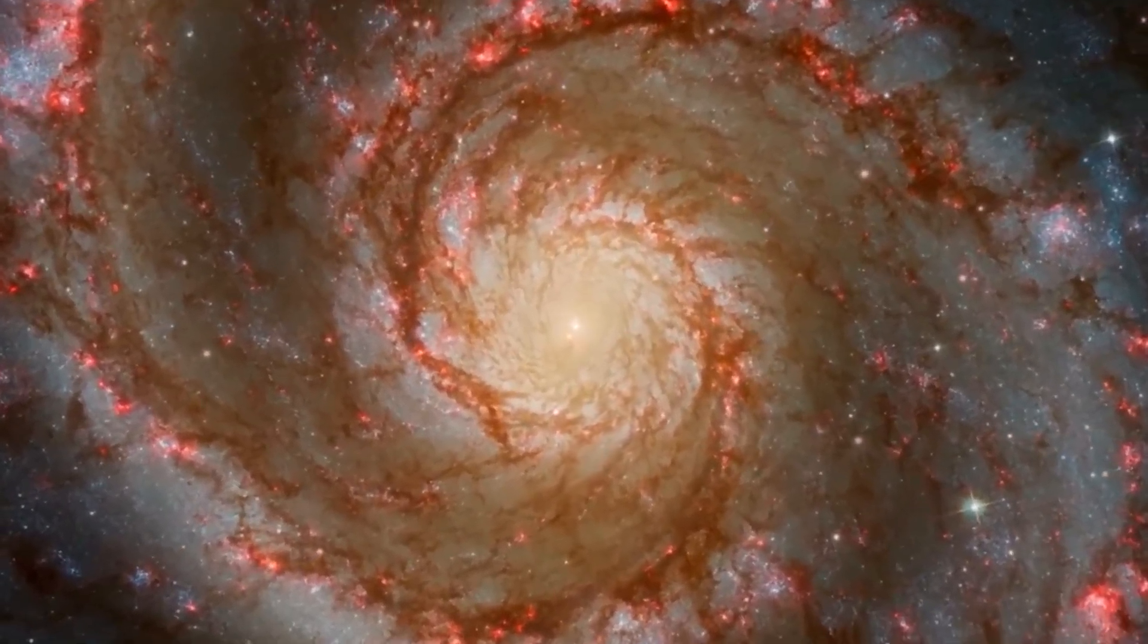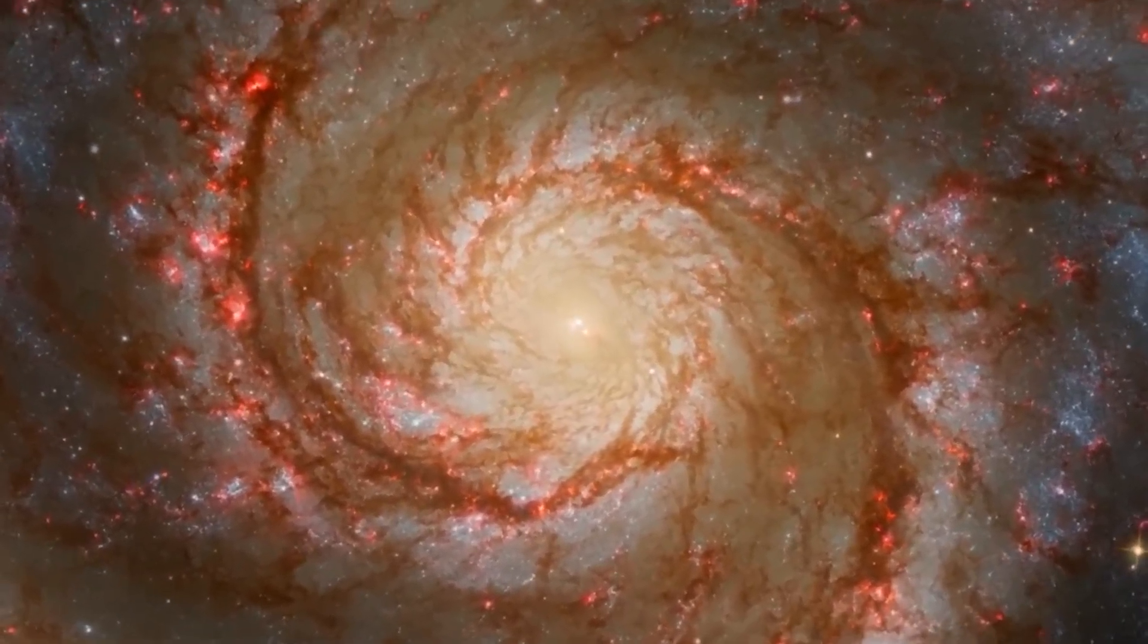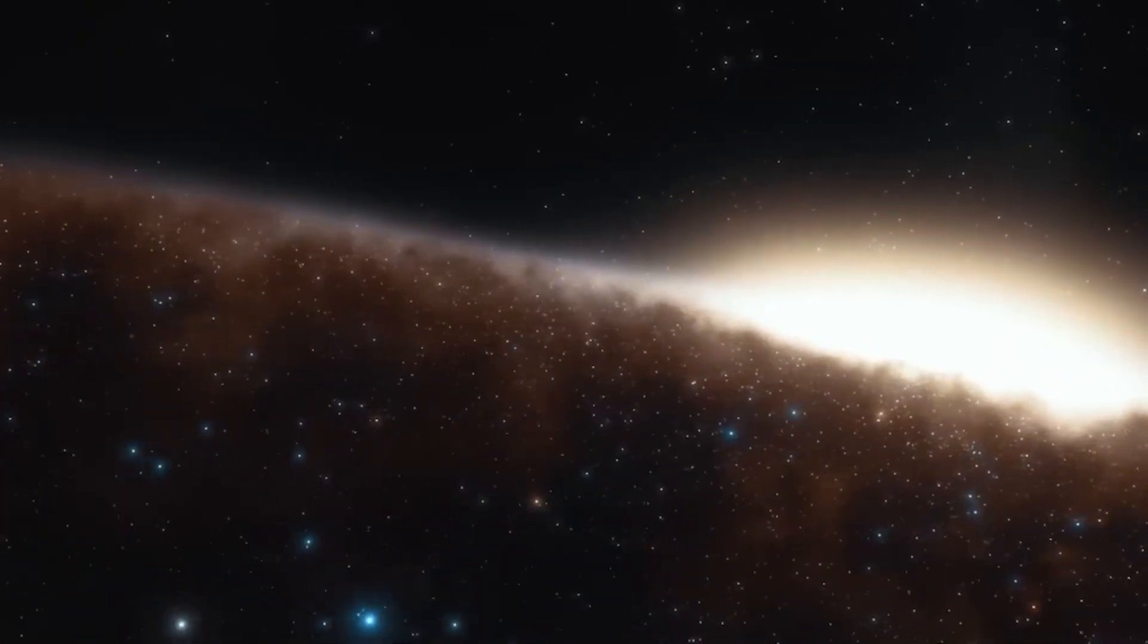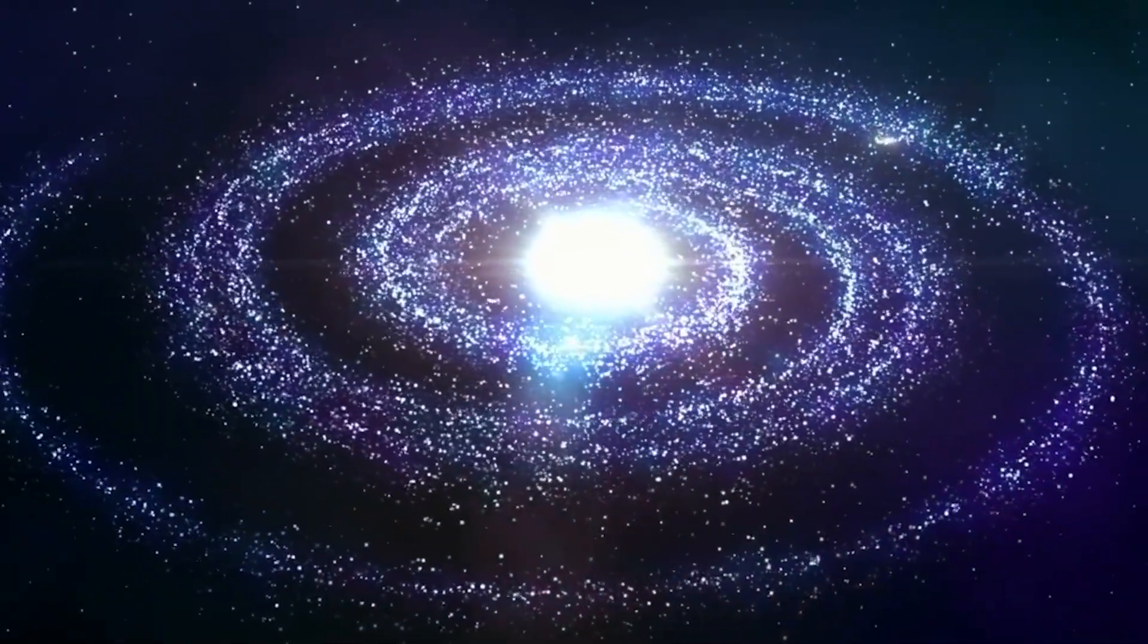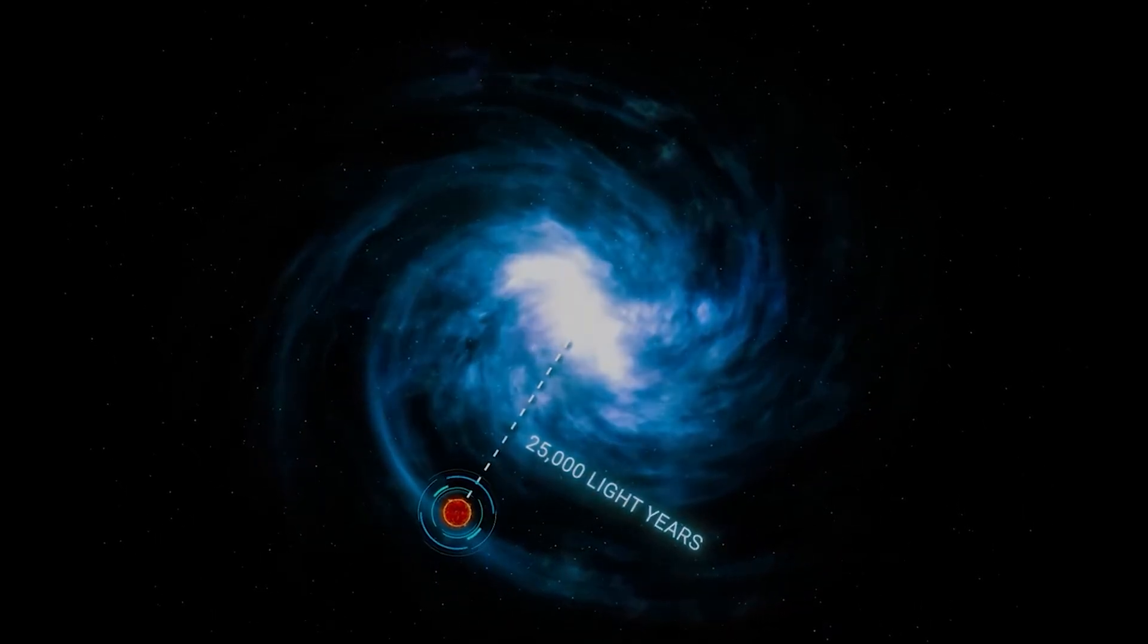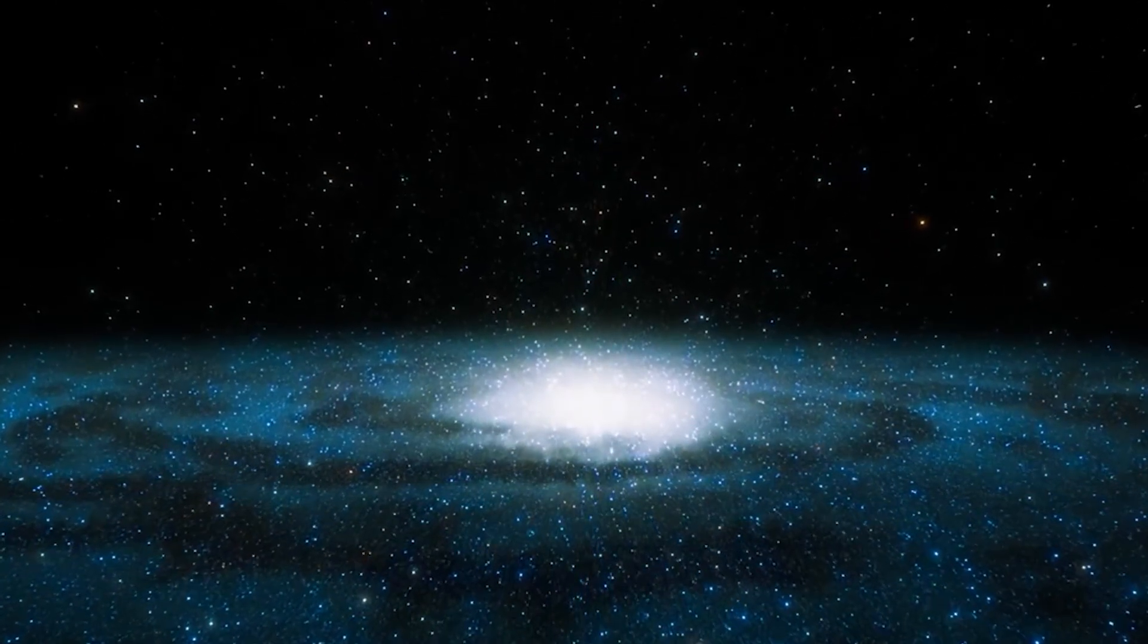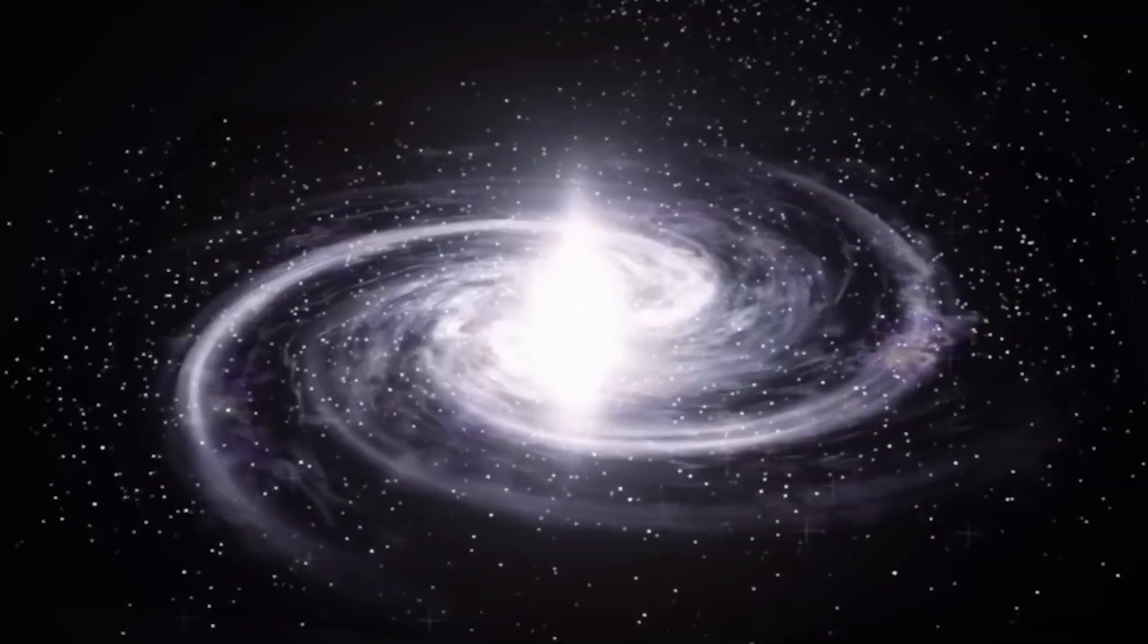This rotation causes stars, gas, and dust to make circular orbits around the galactic nucleus. Our solar system, with the Sun and its planets, is positioned in one of these spiral arms, approximately 25,000 light-years from the center of the galaxy. Here in our solar system, the Sun dominates gravitationally, guiding the movement of all the planets. But in the Milky Way, the scenario is very different. There isn't a single dominant object at the center. Instead, everything revolves thanks to the combined gravitational influence of billions of stars and other elements scattered throughout the galaxy.